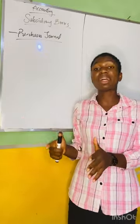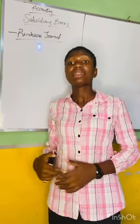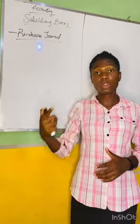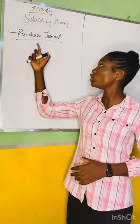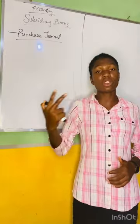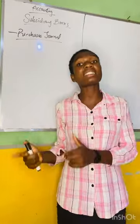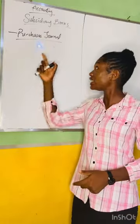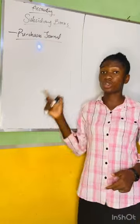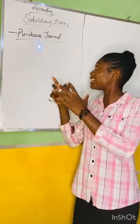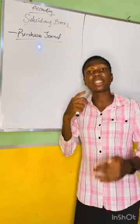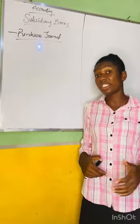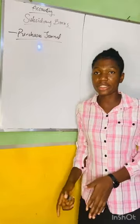Our purchases journal records all the purchases made by the business on credit — that is when the business buys goods for resale. Purchases has to do with goods for resale. If an asset was bought on credit by the business it will not be recorded in our purchases journal. Only goods that the business sells on a day-to-day basis, bought on credit, are recorded here.